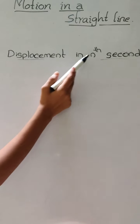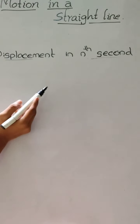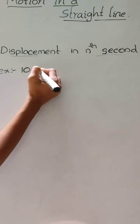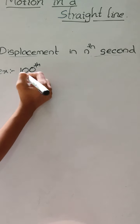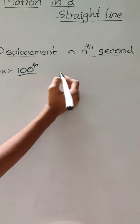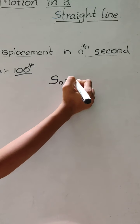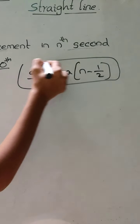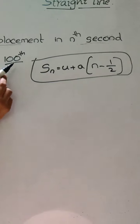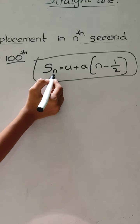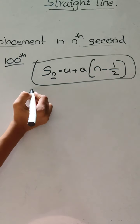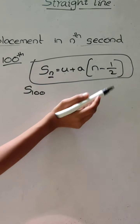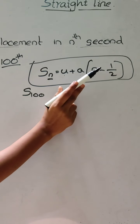Now let us see the formula for displacement in the Nth second. In some exams, they ask you to find the displacement in the 50th or 100th second. In such cases, we use the formula: SN is equal to U plus A times (N minus 1 by 2). For example, to find displacement in the 100th second, substitute N equal to 100, with the given values of U and A.